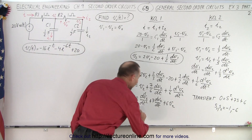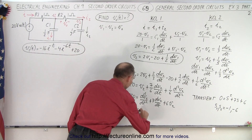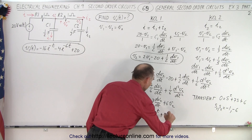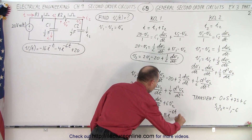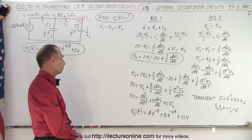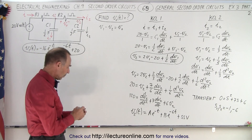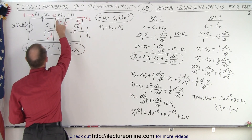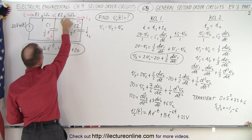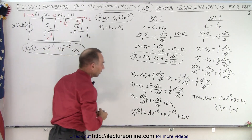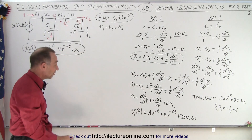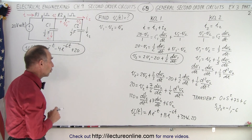Which means, again, we get the equation where V2 as a function of time is equal to A times e to the minus t, plus B times e to the minus six t, plus the steady-state voltage. What's the steady-state voltage? Well, it looks like it's going to be exactly the same as the steady-state voltage for V1, because once the capacitors fill up, no current flows, no voltage drop here, no voltage drop there. So the voltage there is 20, and the voltage there will be 20 as well — the steady-state voltage is simply 20 volts.